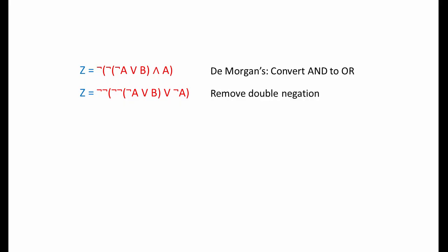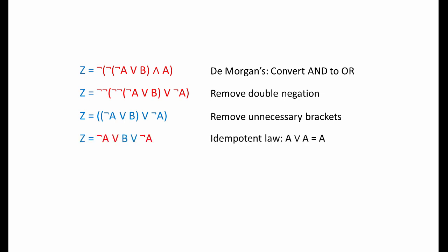Let's look at the solution to the first exercise. De Morgan's is being used to convert the AND operator into an OR operator. Note that the AND operator impacts on the whole expression, which has a bearing on which terms we're adding the NOT operators to. Now we'll remove the double negation, then remove any unnecessary brackets. We can use the idempotent law to reduce NOT A OR NOT A to simply NOT A. Here's our solution.